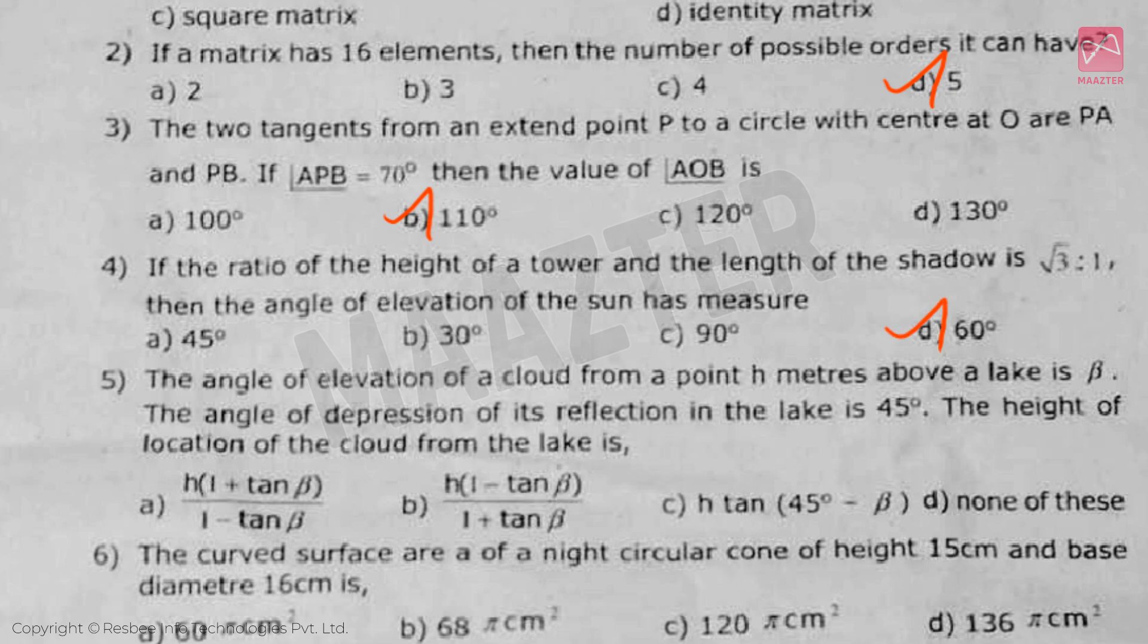Next, the angle of elevation of a cloud from a point h meter above a lake is beta. The angle of depression of its reflection in the lake is 45 degree. The height of the location of the cloud from the lake is, answer is option A.